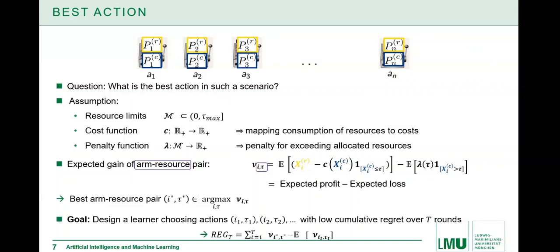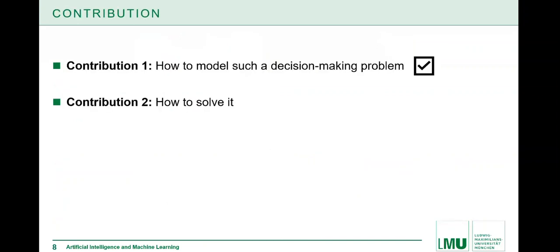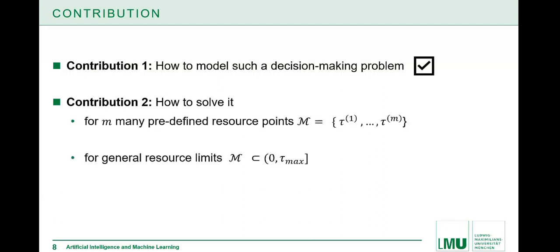The goal is eventually to construct a learner, also a strategy over time, which is doing actions, also choosing arm resource pairs, such that the cumulative regret is low over the capital T many rounds. So we have now seen how we can model this decision making problem in the beginning. Now we come to how to solve it.